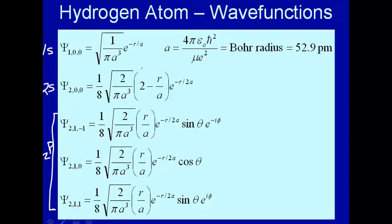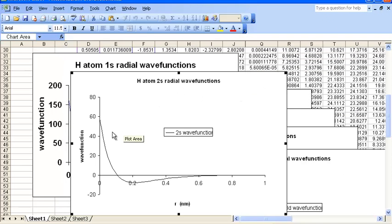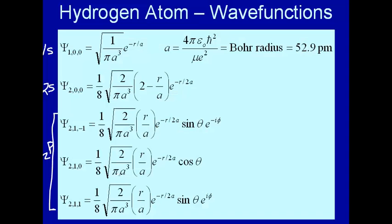For the 2s, we said that there's a value of r, namely when r is equal to 2a, in which the function is 0. There must be a node there. So let's take a look at that. Here's the 2s. Yes, indeed, it starts at high, but then it goes through 0. It's negative, and then it goes back up, asymptotically approaches 0. So that's the 2s wave function. That 0 occurs when r is equal to 2a.